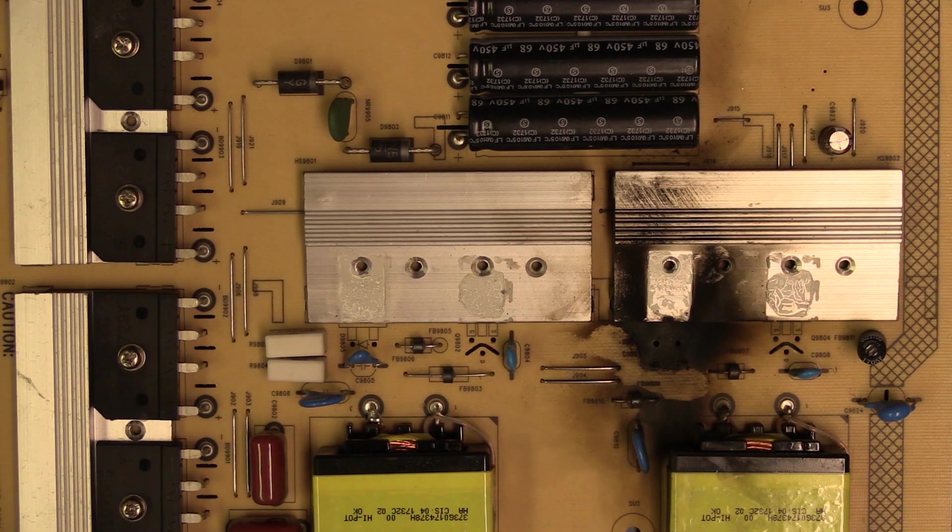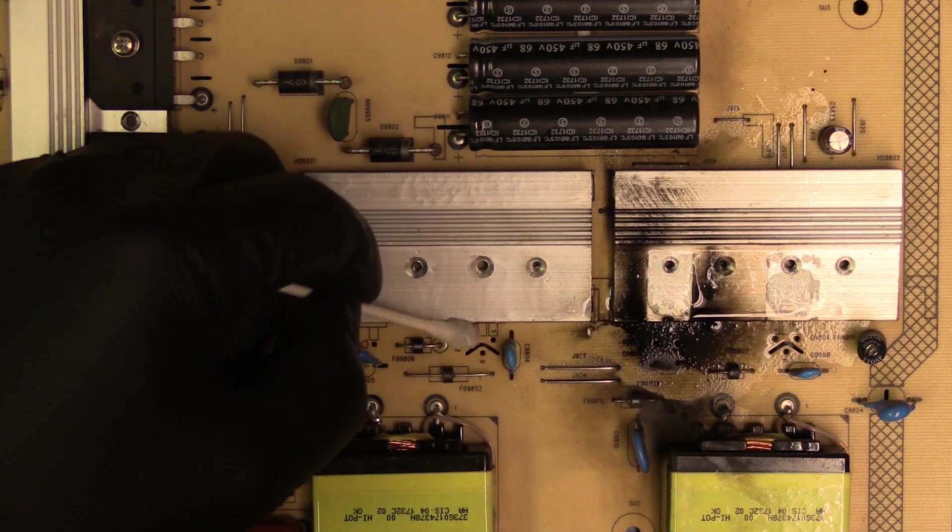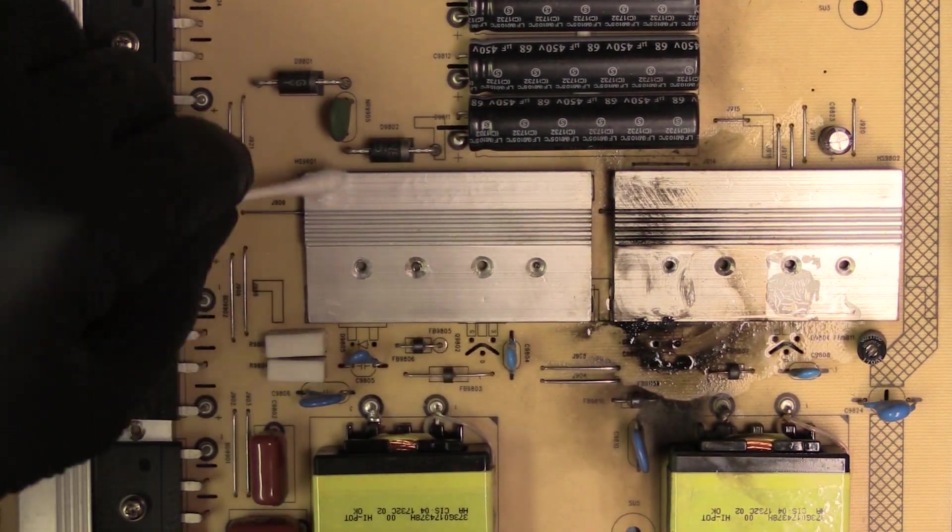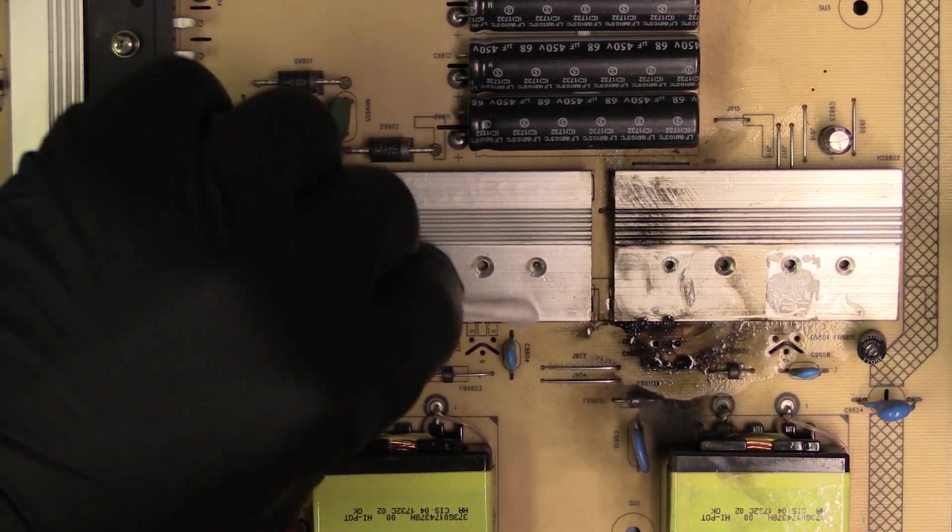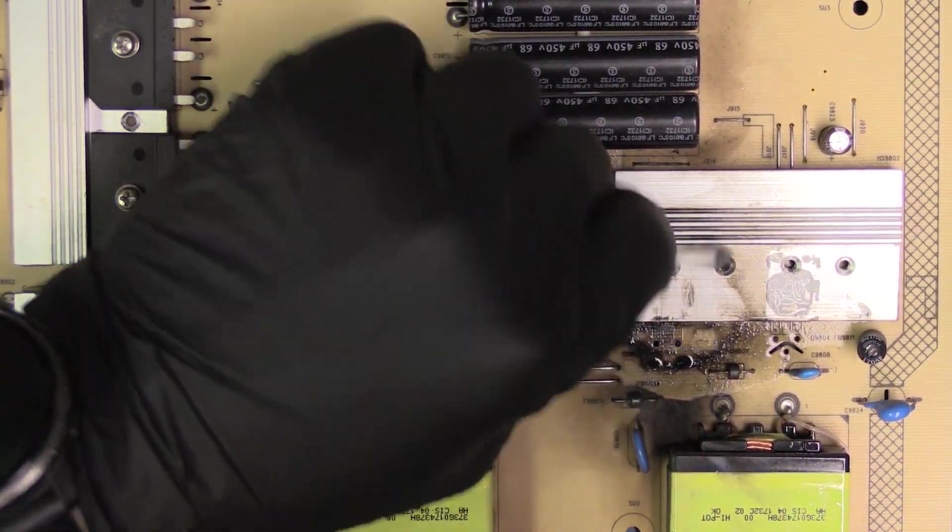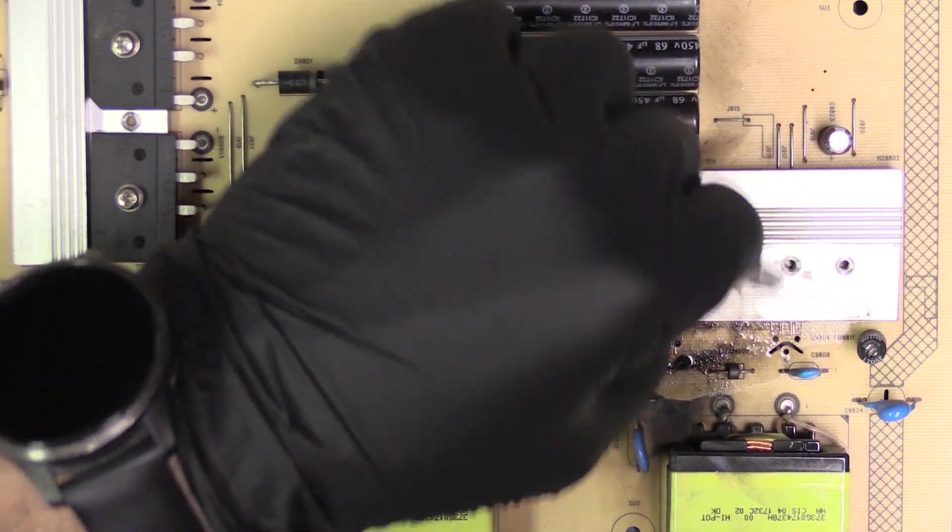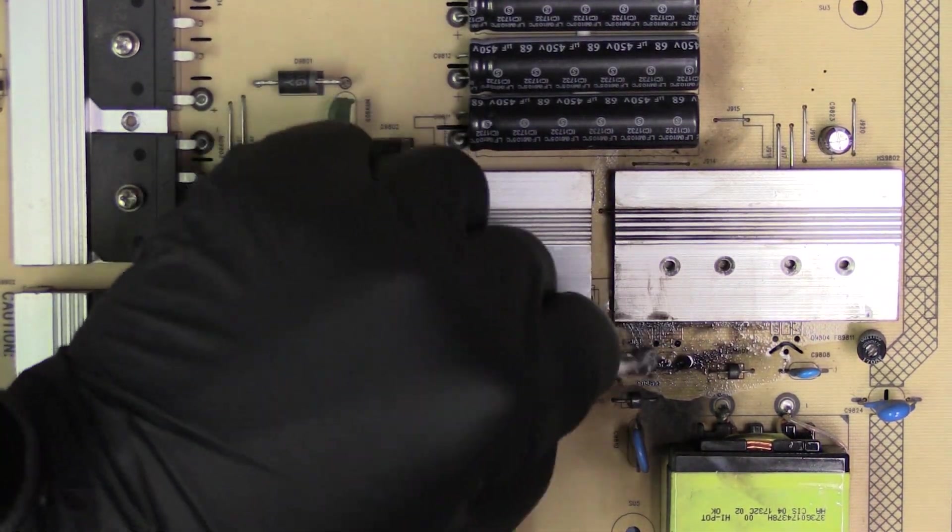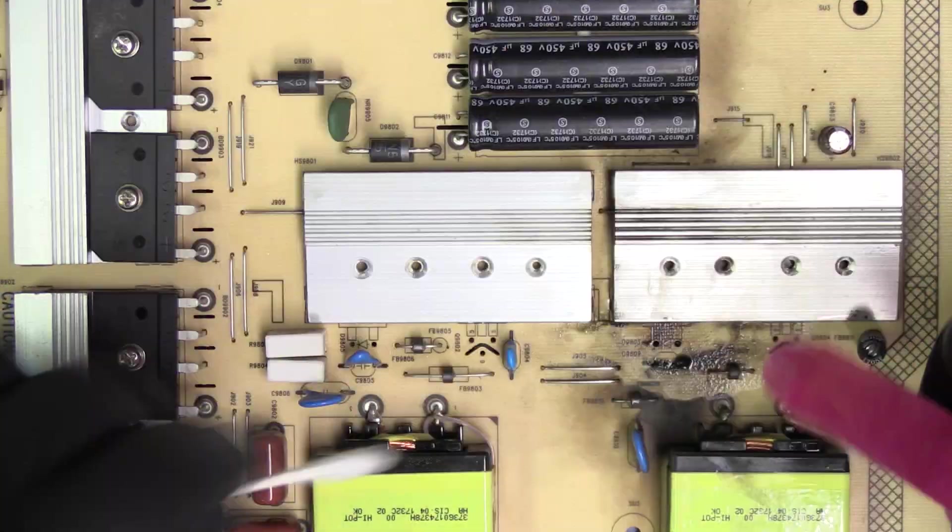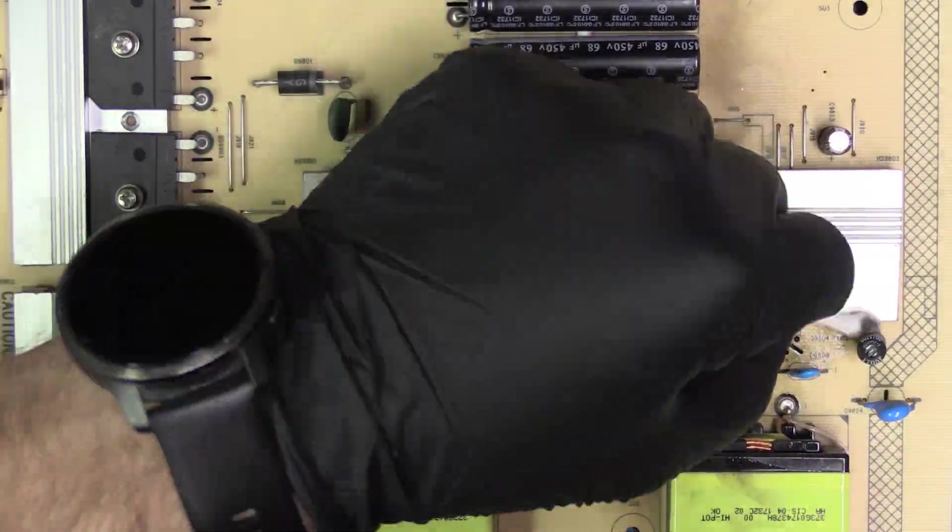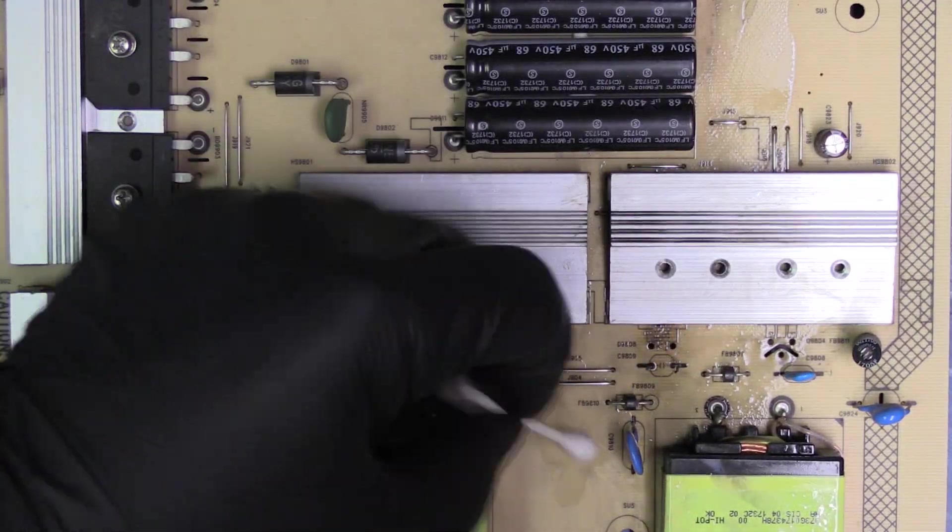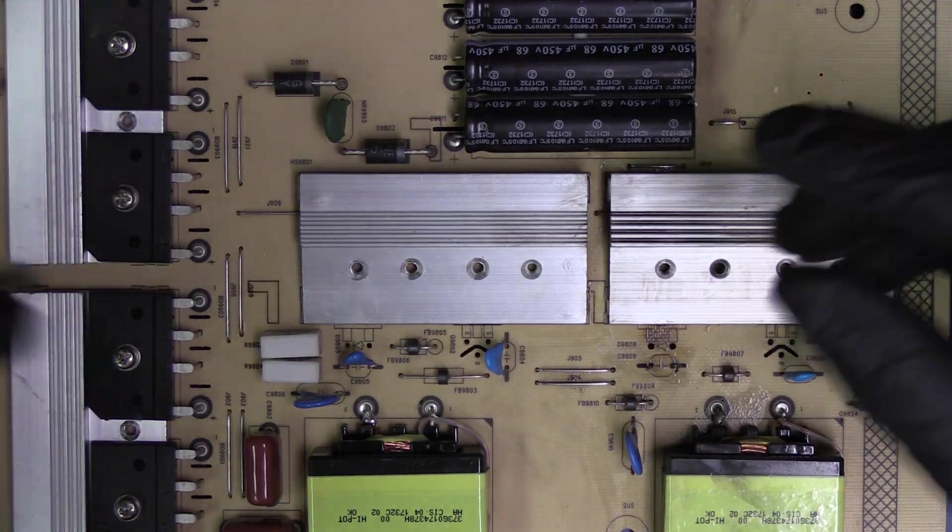Before we install the replacements, I'm going to do a quick cleanup. I want to remove all of the old thermal paste and any of the burning. The old thermal paste is crusty and won't transfer heat as well as fresh paste. The burn marks can become conductive and short things out.